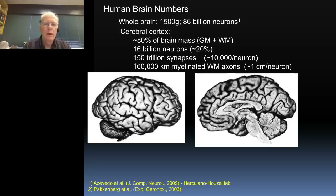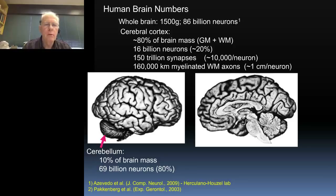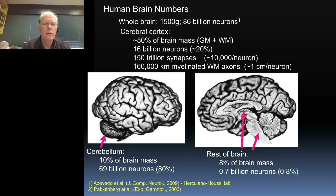The cerebellum, right below the cerebral cortex, is 10% of brain mass but over 80% of the total neuronal count. And the rest of the brain is even smaller — 10% of the tissue, but only 1% of the neurons.